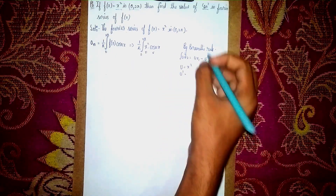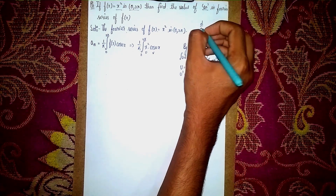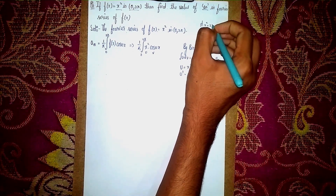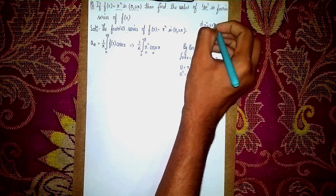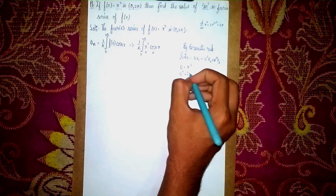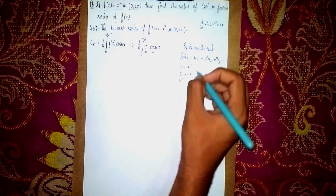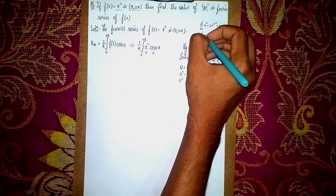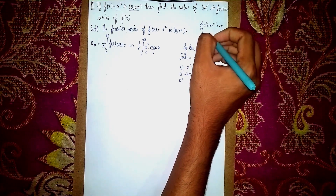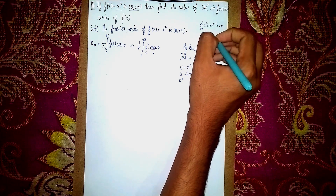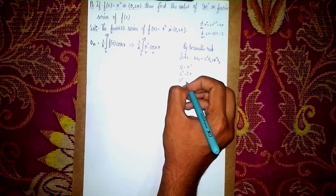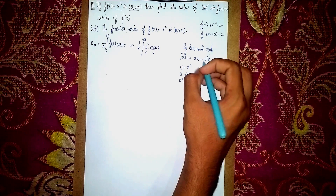Now, u = x². Then u' = d/dx(x²) = 2x. And u'' = d/dx(2x) = 2. So our derivatives are: u = x², u' = 2x, u'' = 2.